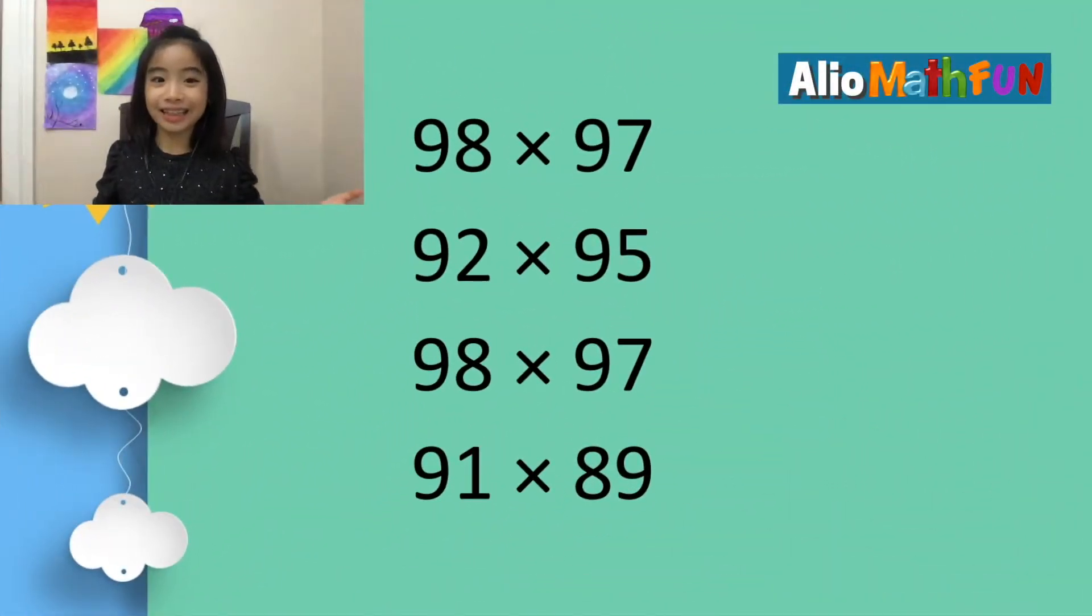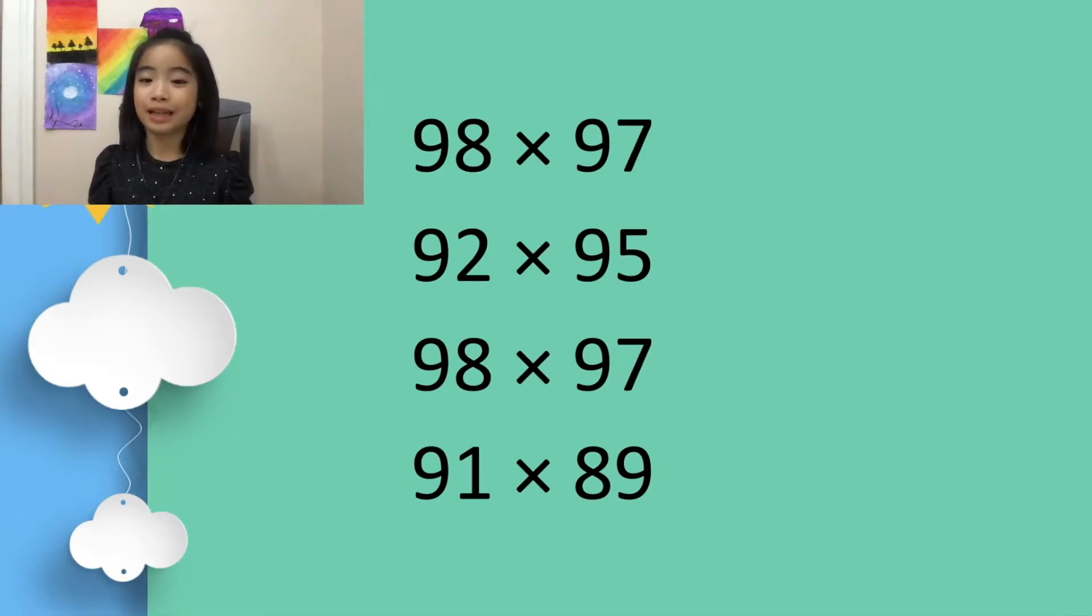As you can see, this trick works for 98 × 97, 92 × 95, 98 × 97, and 91 × 89.